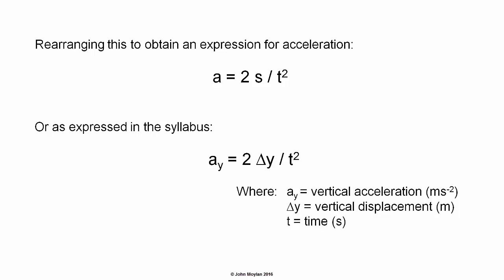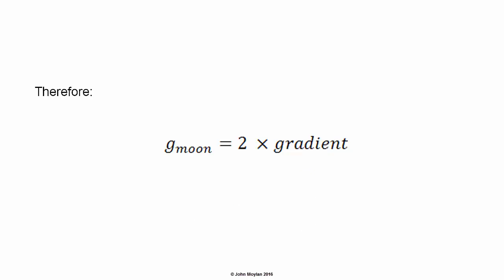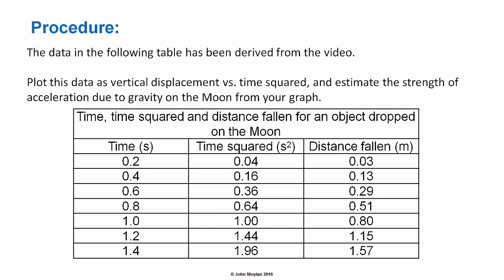Always remember: if you're given a question and your units aren't in meters, meters per second squared, seconds, or kilograms, convert your units to these. The vertical acceleration in this case is the acceleration due to gravity on the surface of the Moon, or g_moon. The gradient of your line of best fit is given by gradient = rise/run = Δy/t², therefore acceleration due to gravity on the surface of the Moon is twice the gradient of your line.